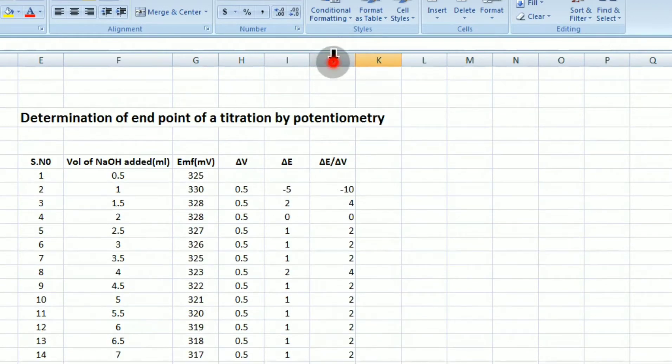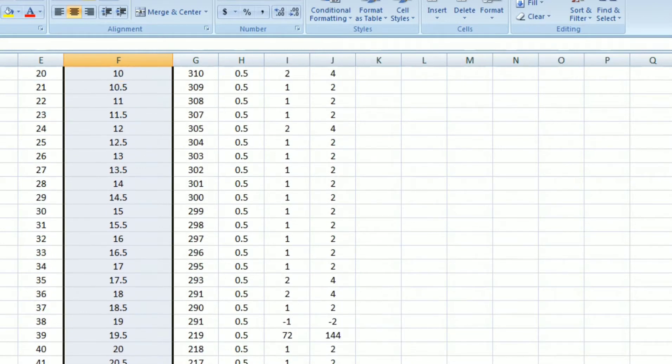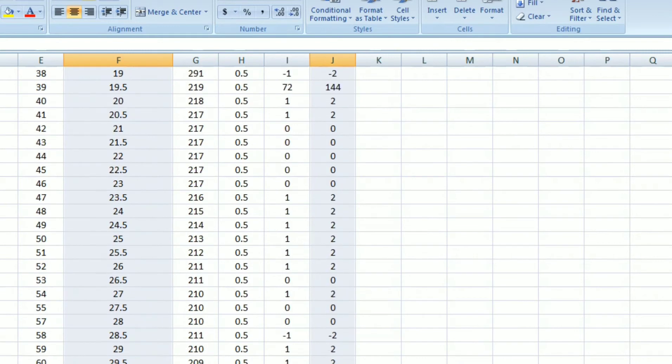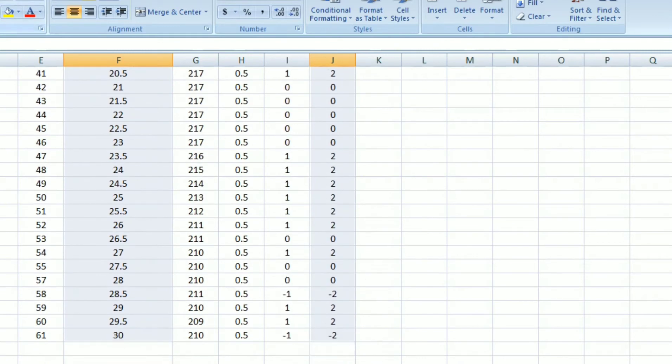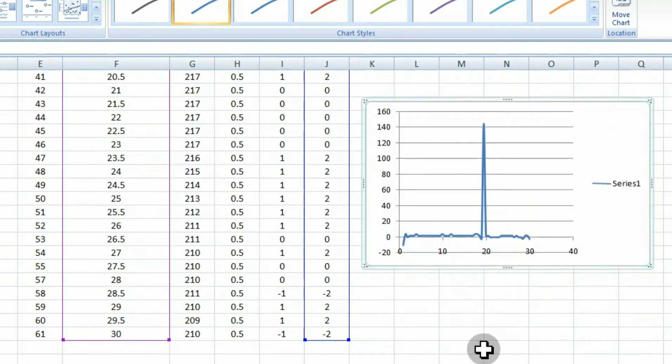And now you have to select the required factors like volume of sodium hydroxide and delta E by delta V values. So now you can see I have selected two columns and then you have to insert graph, that is the scatter with the smooth lines. Then you will be seeing this type of a graph.